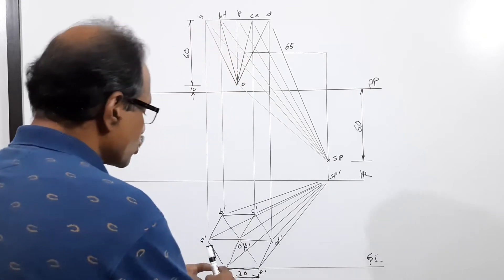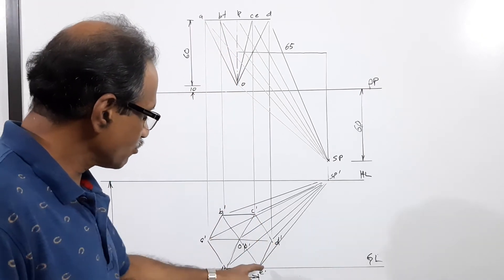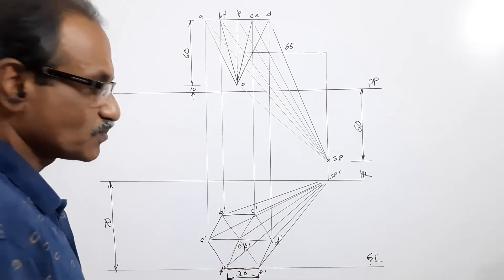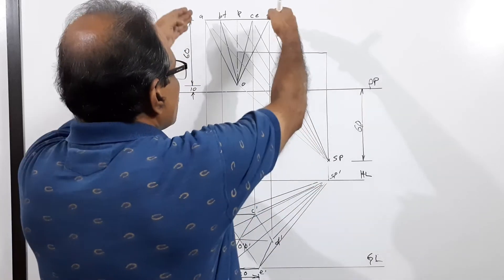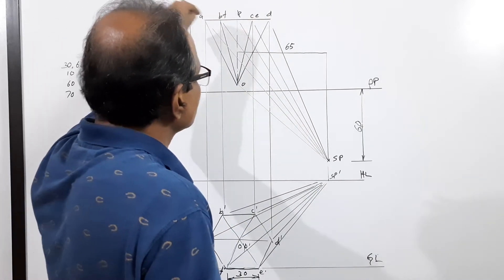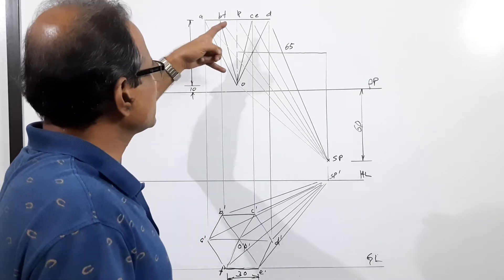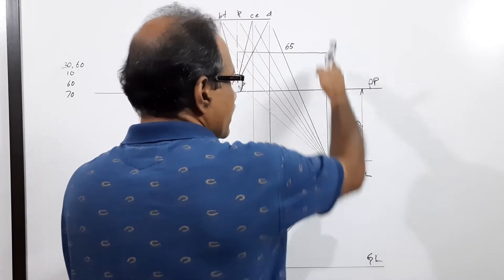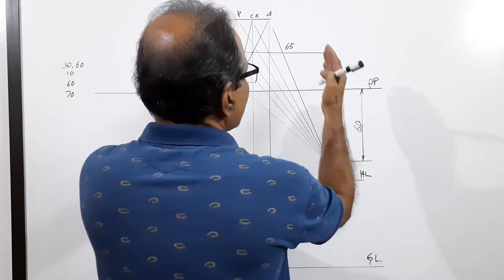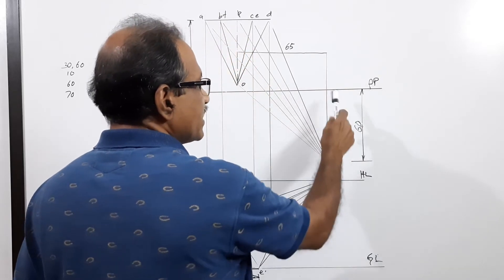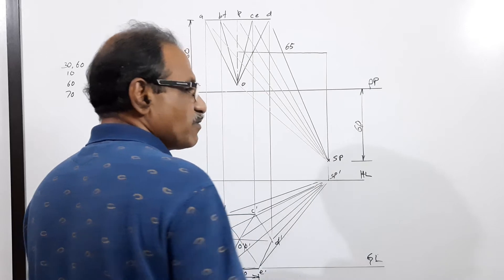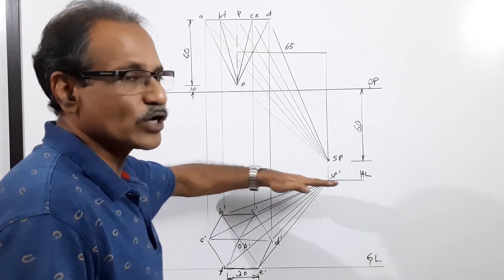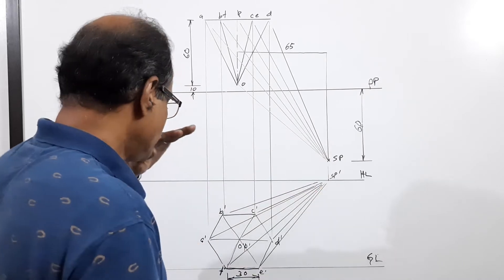First, draw the elevation of the hexagonal pyramid with one edge on the GL — complete the hexagon with points A, B, C, D, E, F, O, and the axis. Then draw the plan projected from this elevation. The apex is 10 mm behind the picture plane, the axis length is 60 mm, and the base side is 30 mm. Draw a horizontal line 60 mm from the axis for the center plane, which is 65 mm from the axis.